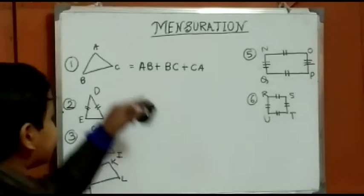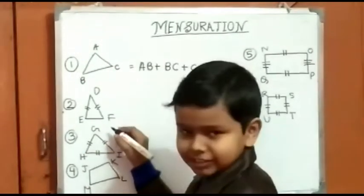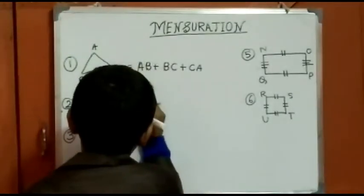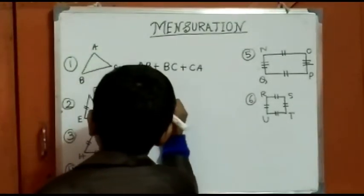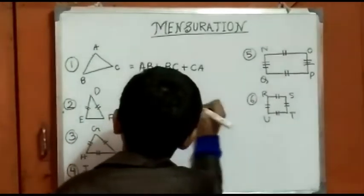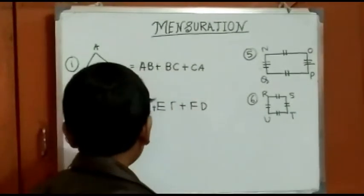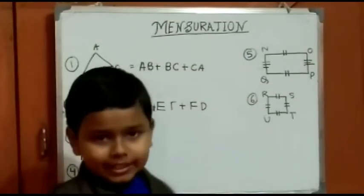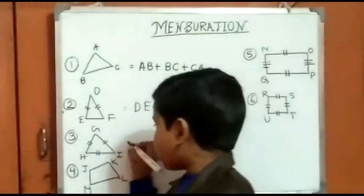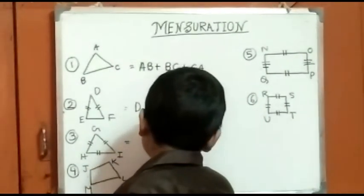So this is the perimeter of this triangle. Now this is an isosceles triangle. Here again DE plus EF plus FD. Now in case of equilateral triangle, all sides we know are equal, so we can multiply it by 3, the sides. So it is 3 multiplied by side.